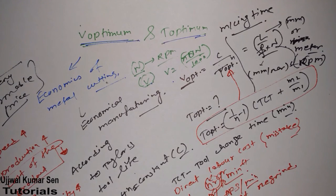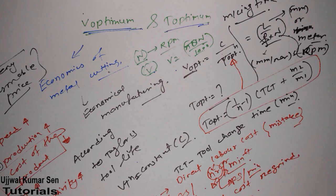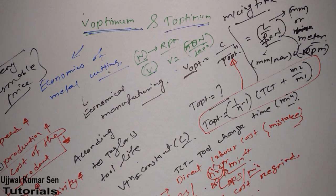So in economics of metal cutting, the key topics are machining time, V optimum, and T optimum. I hope you understand what is V optimum, what is T optimum, and how machining time relates to the speed of the machining process — whether spindle or workpiece. Thanks for watching, see you soon in my next video.